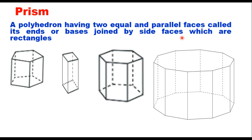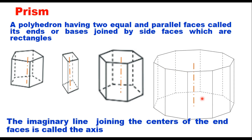The second type of solid with faces is a prism. A prism is formed when you have two equal and parallel faces called its ends or bases, joined by rectangular side faces. The end faces can be a square, pentagon, hexagon, or octagon — the number of vertical side faces equals the number of sides of the base, and each vertical face is a rectangle. The imaginary line joining the centers of the end faces is called the axis of the solid.